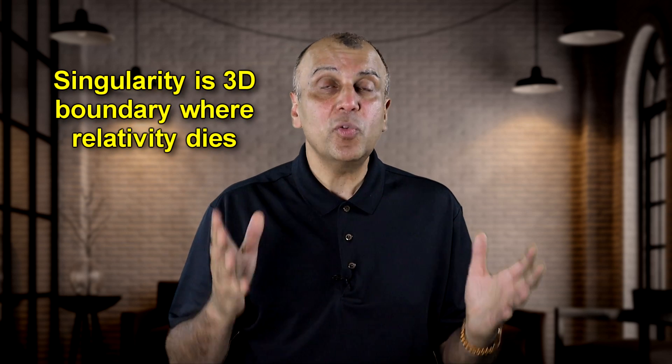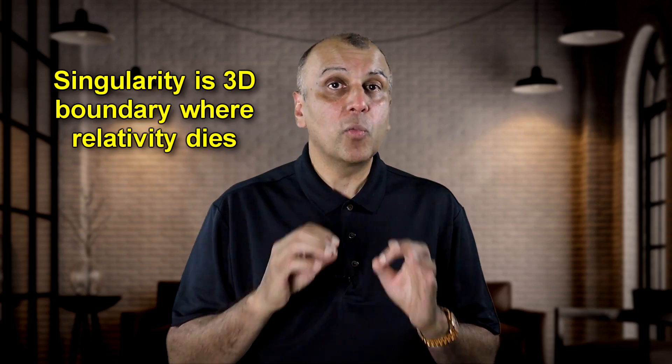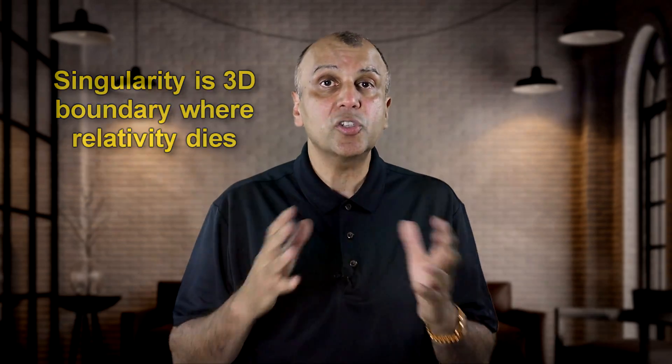A black hole is where quantum mechanics and relativity collide. Gravity becomes a dominant force of the quantum scale at the singularity. Now I've been describing the singularity as a point or a ring. That's hypothetical because it is really a three-dimensional boundary where relativity dies and all our notions of reality are gone, and some kind of new physics like quantum gravity takes over.